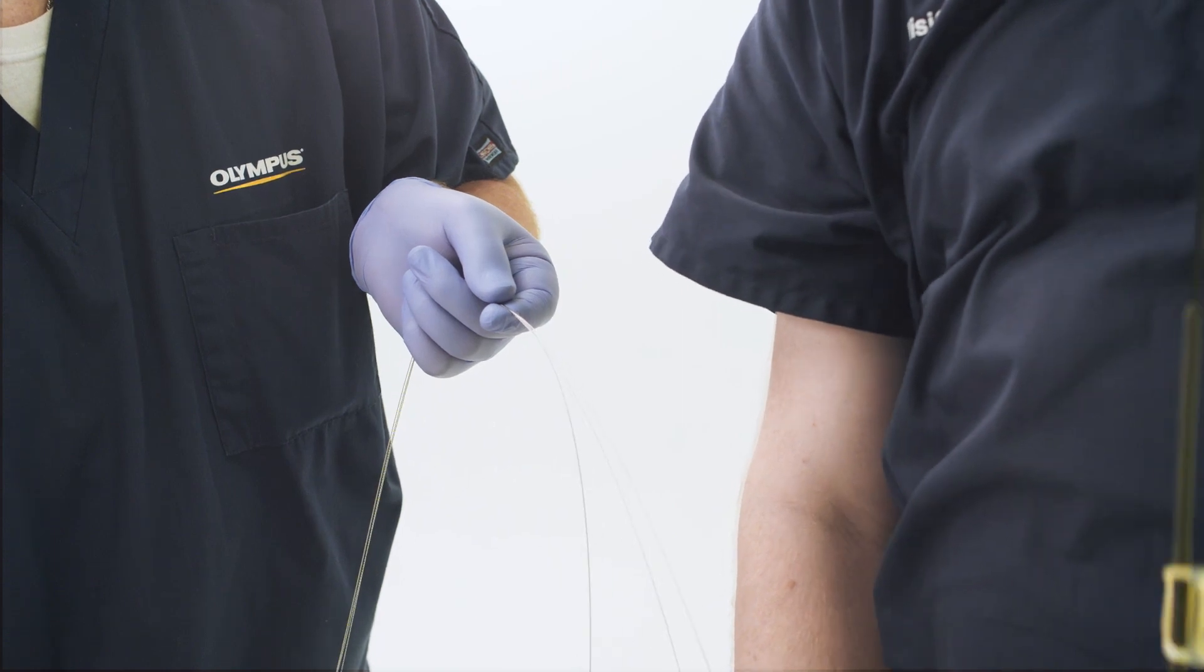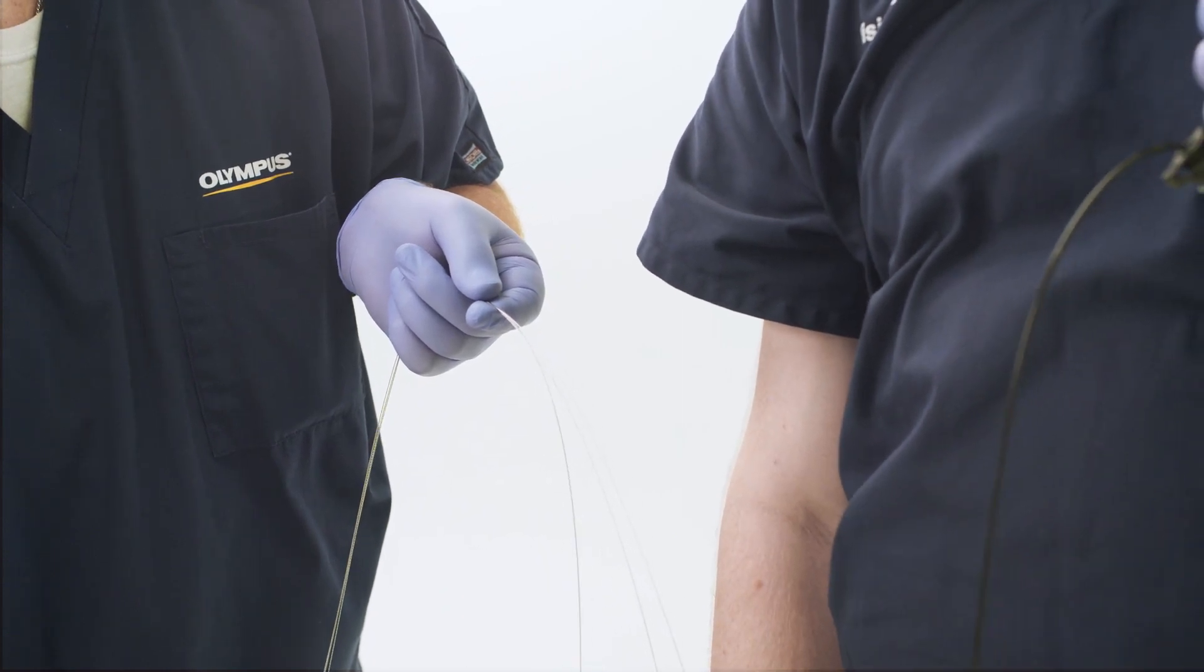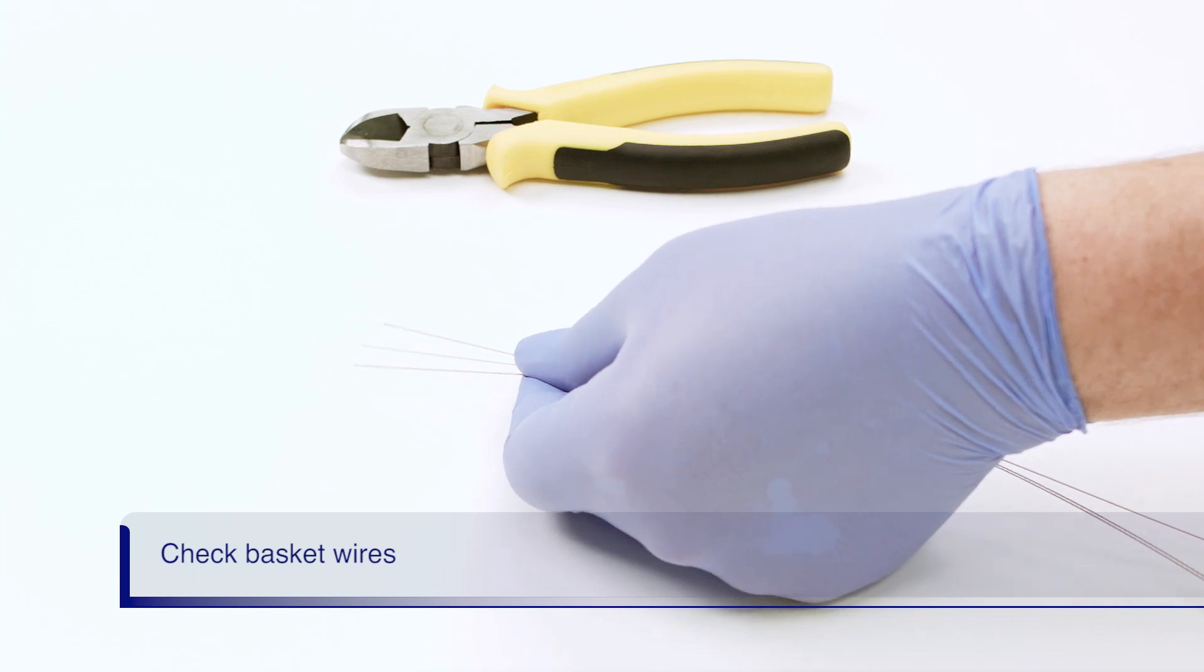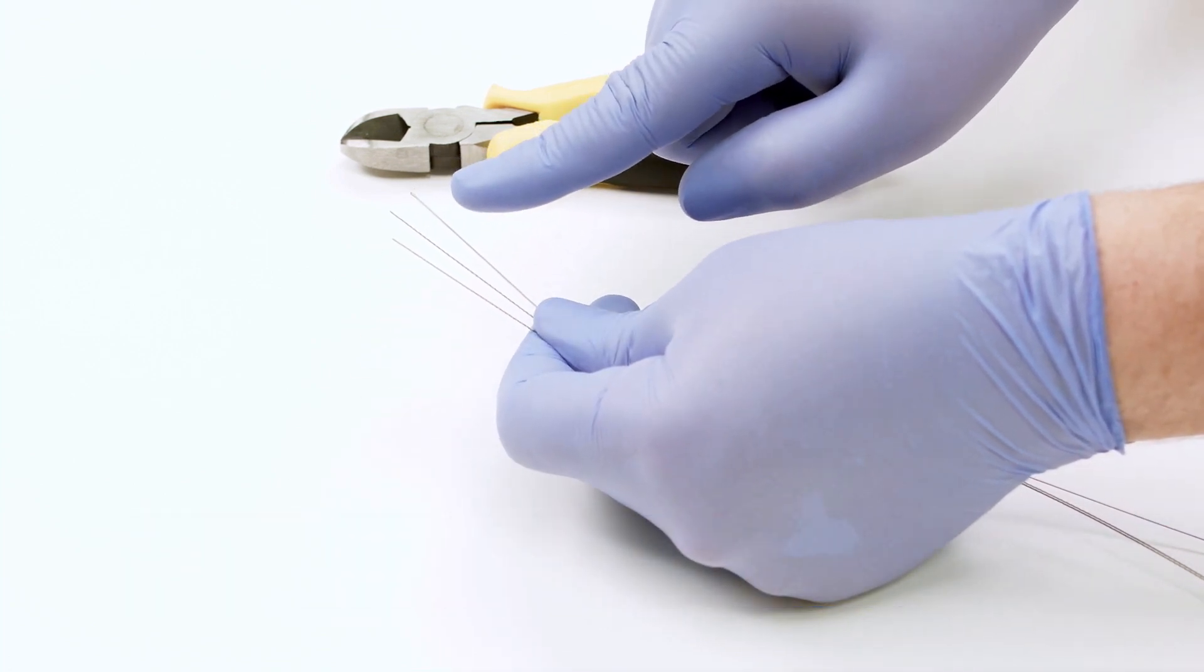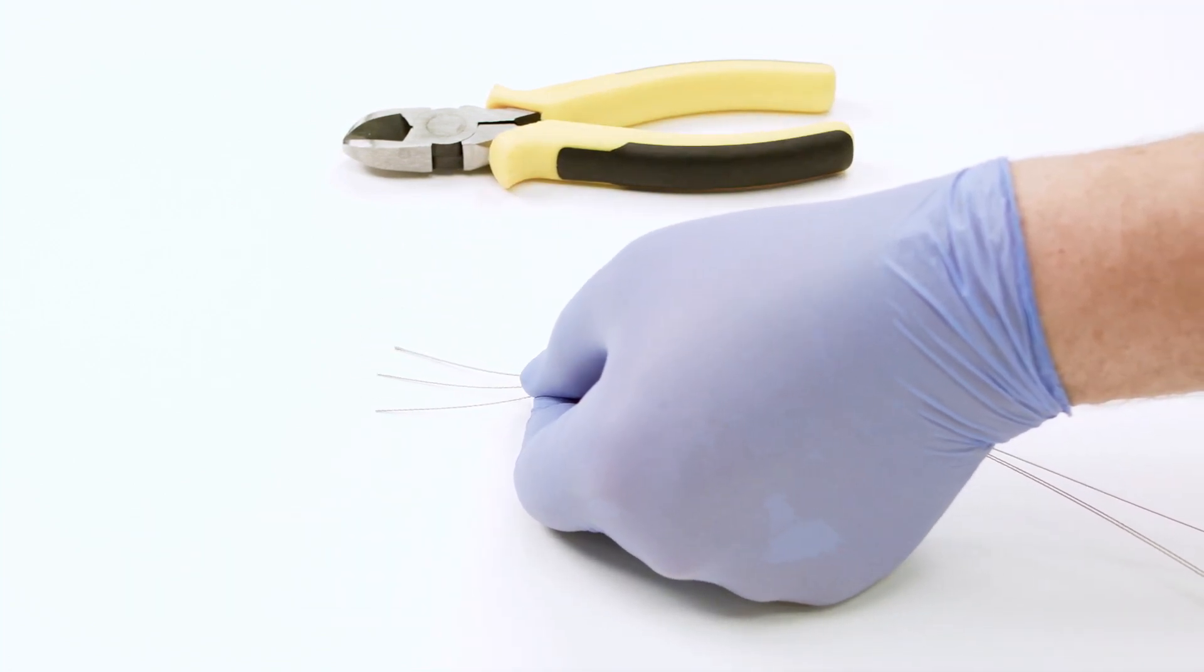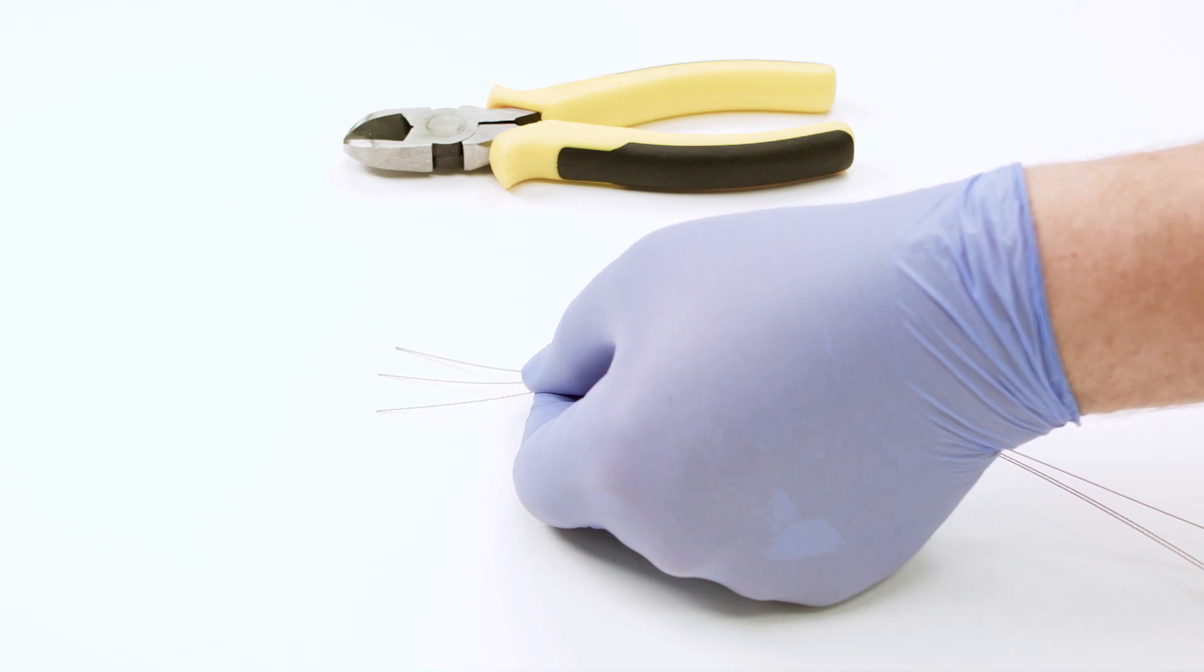Now, you should see the basket wires hanging from the patient's mouth. Ensure that each wire is smooth at the end. At this point, it is important to count the number of wires coming out of the patient.